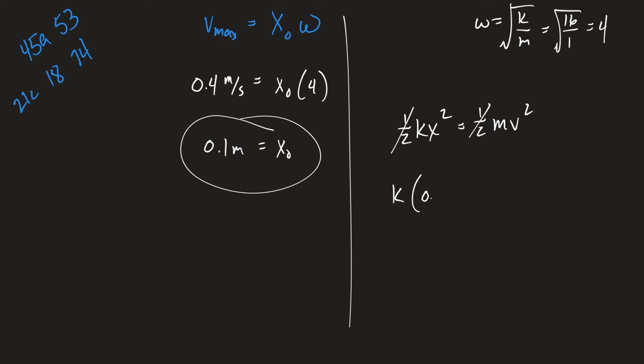So that's going to be k times 0.05 squared equals m v squared. That's probably enough to get you started don't you think? Would that be okay? Or do you want me to keep going?